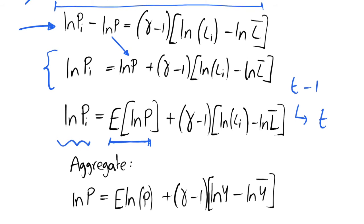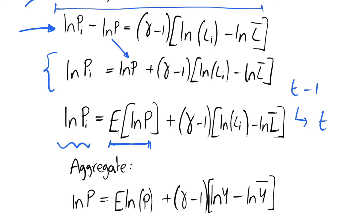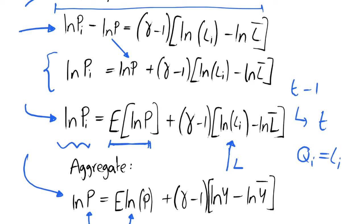For a Phillips curve we want an aggregate relationship, so this is where we go from our microfounded model and aggregate to get some aggregate relationship. We aggregate pi up to just the aggregate price level, assuming a representative firm so every firm acts the same way. We also aggregate li into l, and since qi equals li, aggregating gives us q equals l, and q is just our output y in the economy. Aggregating up our micro Phillips curve, we get our aggregate Phillips curve relationship.